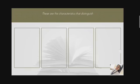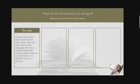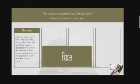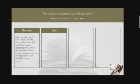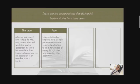Here are the characteristics that distinguish a feature story from hard news. The first is the lead: a feature lead doesn't have to have the who, what, where, when, and why in the very first paragraph the way a hard news lead does. Instead, a feature lead can use description or an anecdote to set up the story, and can run for several paragraphs instead of just one. The second characteristic is pace: feature stories often employ a more leisurely pace than news stories, taking time to tell the story instead of rushing through it, allowing the writer to explain detailed information.